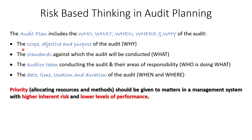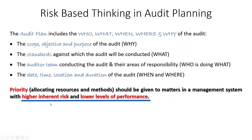When you're defining the scope of an audit and thinking about how you're going to spend your time — the duration of an audit and how much time you're going to spend on each topic — you should be prioritizing topics that have inherently high risk and lower levels of performance. Areas with inherently higher risk can't be easily defined because it depends on your industry and the company, but lower levels of performance is easy to define.